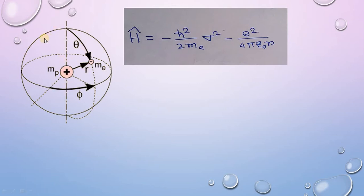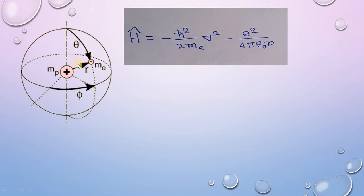Briefly going through the hydrogen model or quantum mechanical hydrogen model. According to this model, the positive charge of the nucleus is at the center of the hydrogen atom and the electron is rotating around in three dimensions around this positively charged proton. The distance between the proton and the electron is designated by r, and there are two types of angles: theta, the polar angle between r and the z-axis, and phi, the azimuthal angle. By knowing these three parameters r, theta, and phi, we can fix the coordinates of the electron.